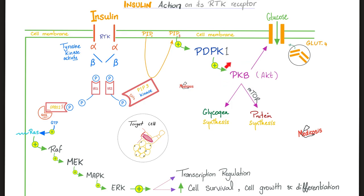You activate protein kinase A when you are starving or running from a tiger — it's the sympathetic land, the starvation land. But insulin is the land of abundance — you stimulate protein kinase B to open the GLUT4 and get the glucose in, because you were just relaxing and had a beautiful, fatty, carby meal.